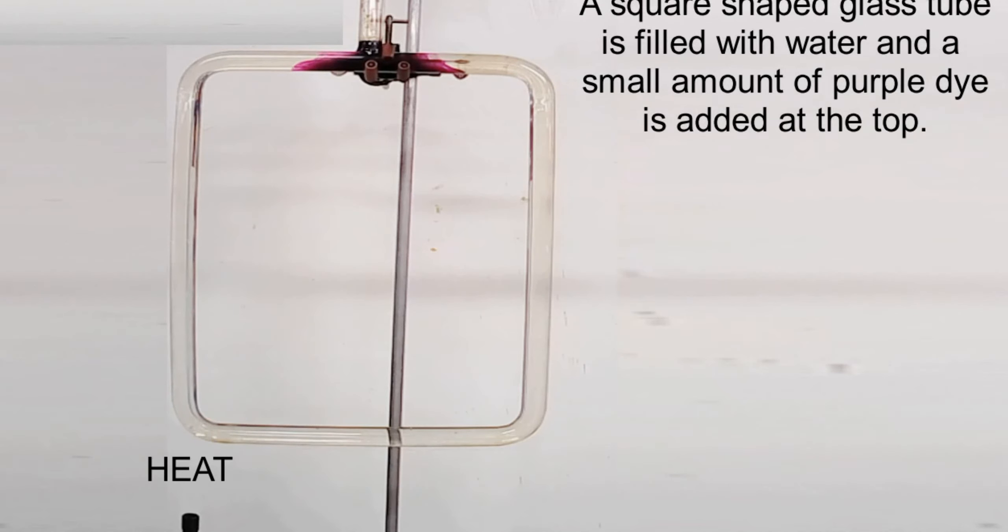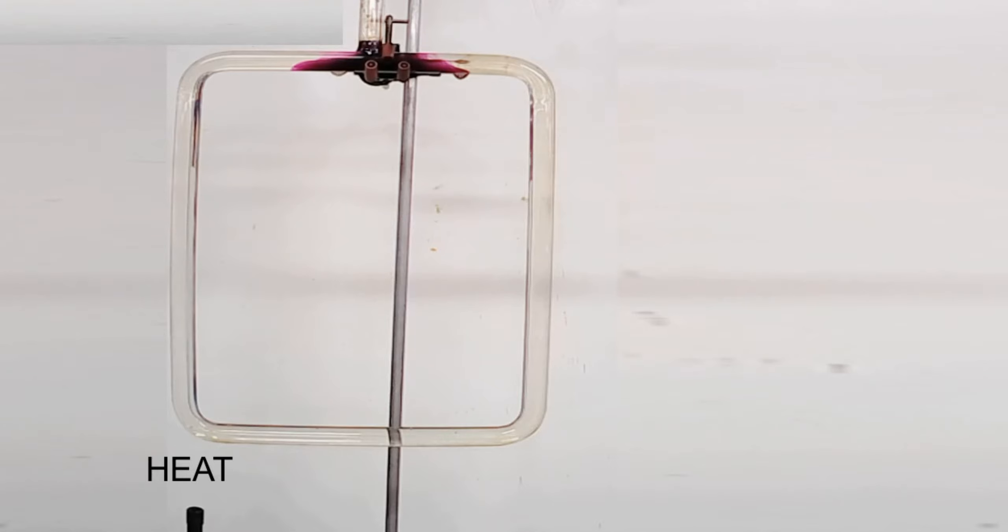You can see that at the top, and then heat is added at the bottom left. You can see straight away that the dye is moving clockwise. This is a process called convection.